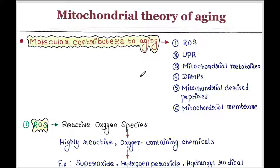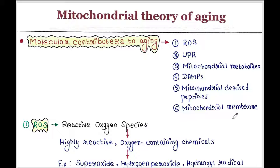So there are a few molecular contributors to aging, like ROS, UPR, mitochondrial metabolites, DAMPs, mitochondrial derived peptides, and mitochondrial membrane. We will talk about them one by one.